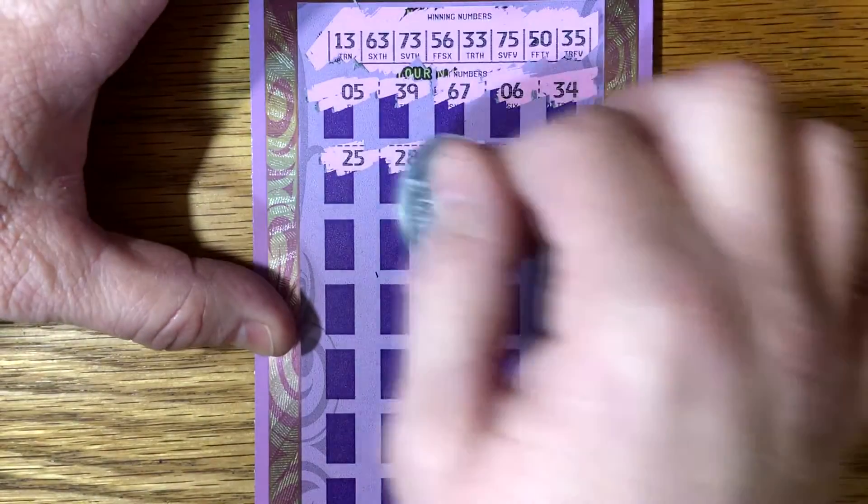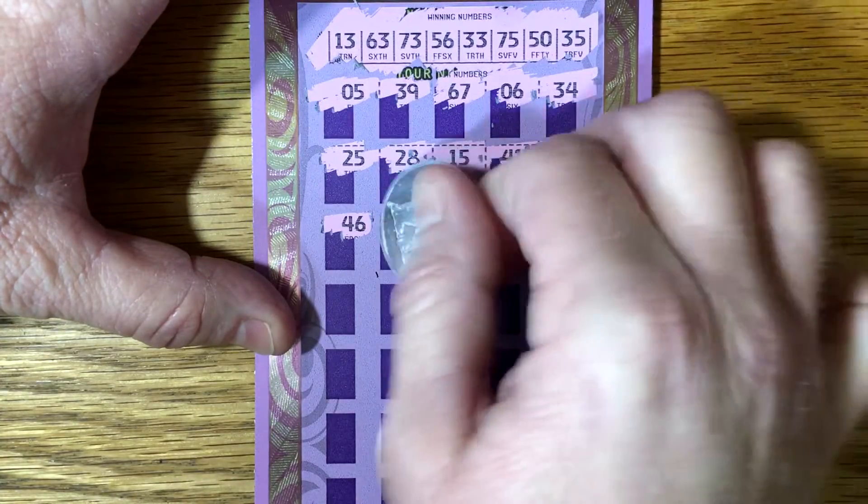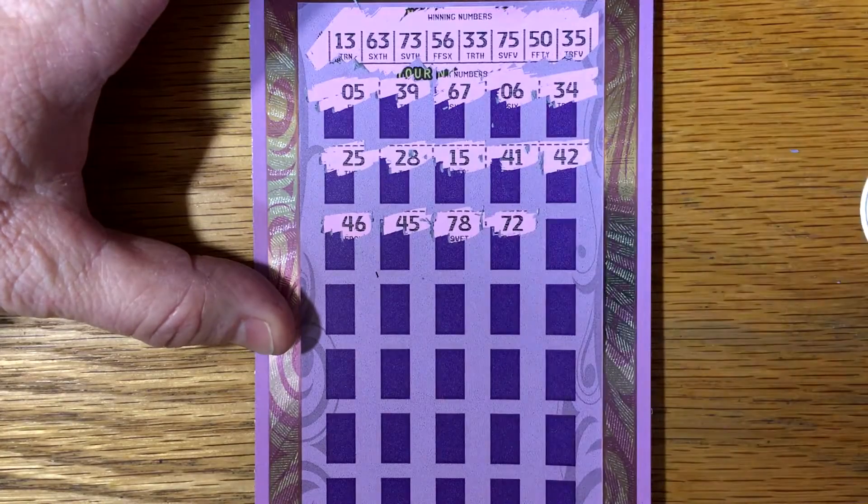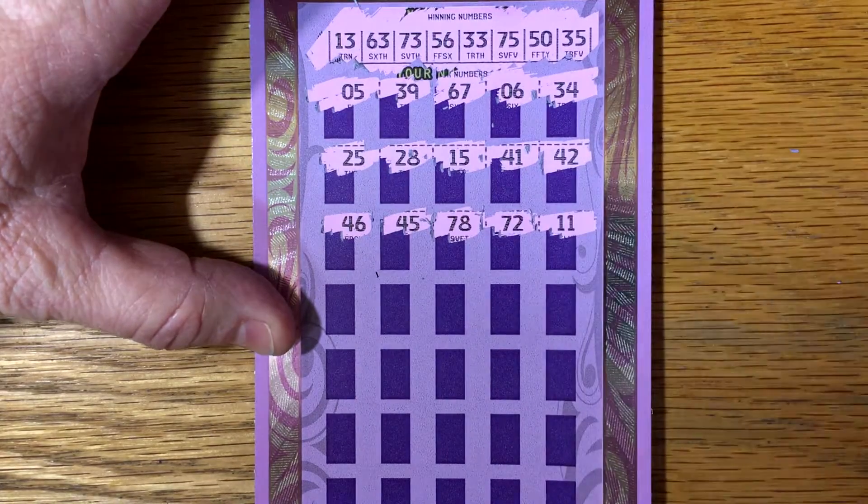It's always fun buying these tickets, but it's more fun when you split the cost. So Mac, I appreciate that. 45, 78. Wow, these numbers go so huge. 72, 11.